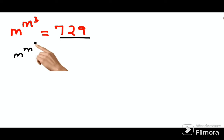m raised to m raised to 3 equals 729, which can be written as 9 cube. Now your entire job will become very easy if your question looks like this.